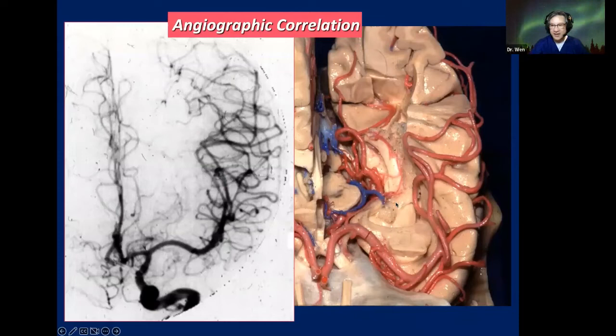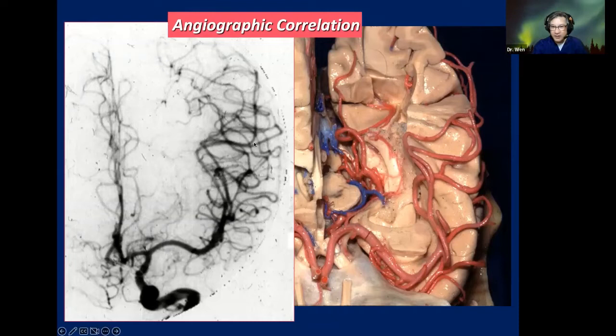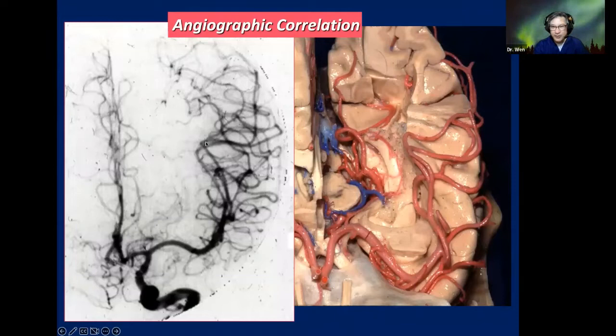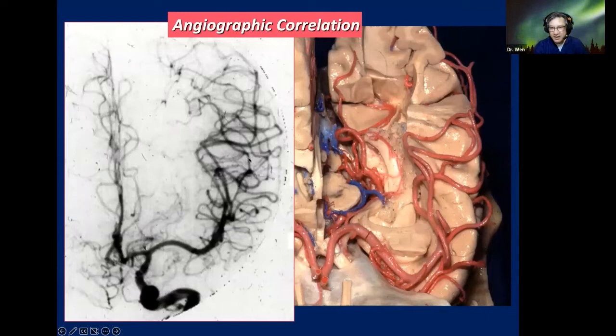This is one of the first dissections I made when I was in Gainesville, Florida in the 1990s in Dr. Roten's lab. I wanted to understand, for instance, why this is called the Sylvian Point, where it is located. The Sylvian Point is the most distal branch of MCA before exiting the Sylvian fissure. Why is this branch straight? And why is this other branch making such a curve? I had many questions.